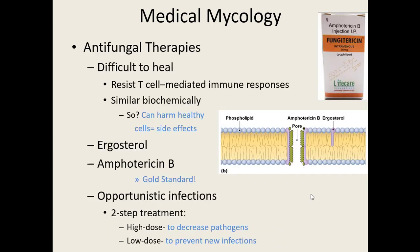Treating fungal diseases is getting more and more difficult. They're becoming resistant to many antifungals, and they naturally resist our immune response. They're also biochemically similar to us — they are eukaryotic organisms. When we try to kill eukaryotic fungal cells, it can damage our own cells, leading to many side effects such as headaches, rashes, and digestive system issues.